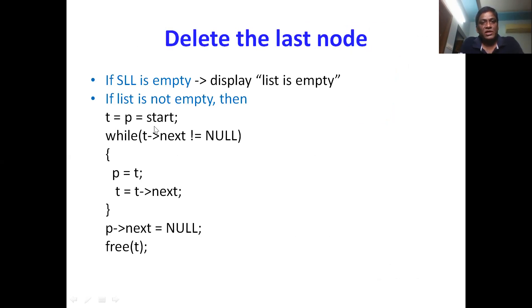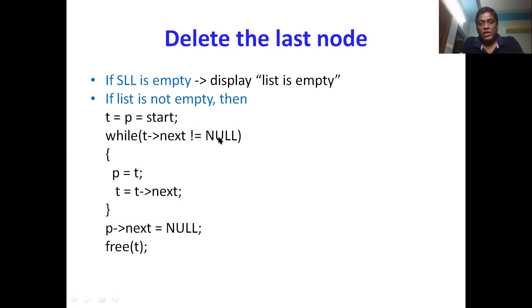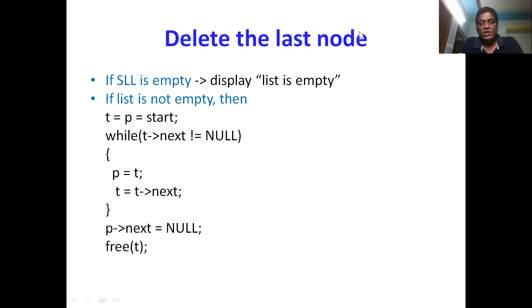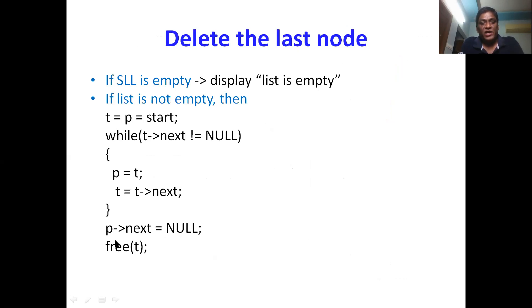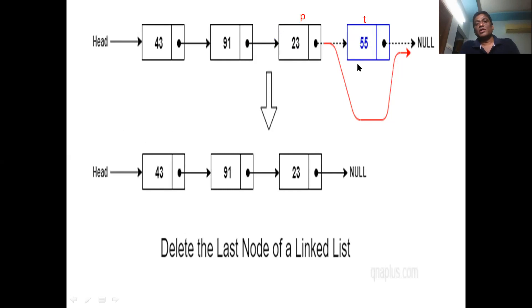The steps are: set t = p = start. While t->next != null, set p = t and t = t->next. This loop runs until t reaches the last node. Once the loop ends, t is the last node and p is the node before it. Then set p->next = null to make p the new last node, and free(t) to release the deleted node's memory.